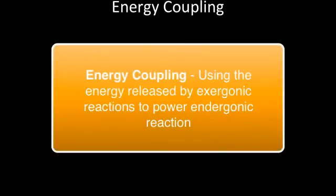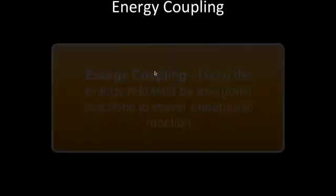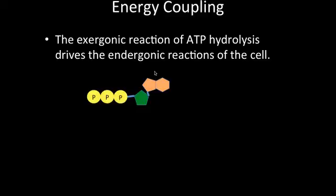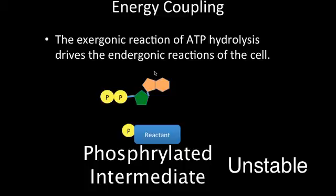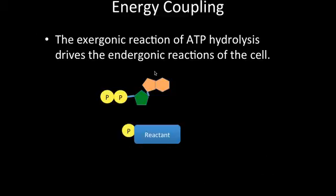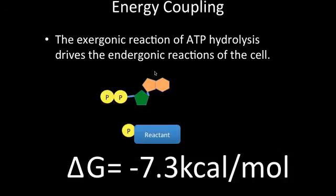Recall this transfer of energy from exergonic to endergonic reactions energy coupling. The exergonic process of transferring a phosphate group from ATP to specific reactants forms a phosphorylated intermediate. Now that phosphorylated intermediate is unstable and therefore more reactive. So the hydrolysis of ATP is exergonic. In fact, the reaction has a change in free energy of negative 7.3 kilocalories per mole.